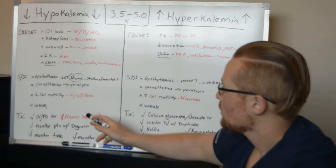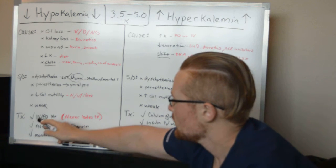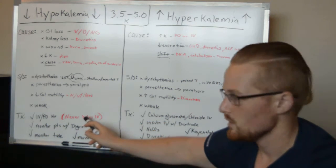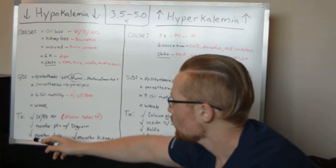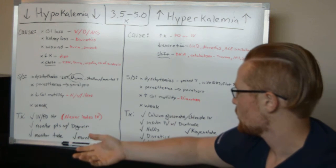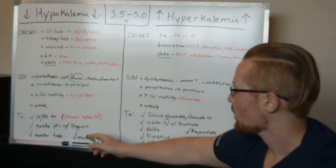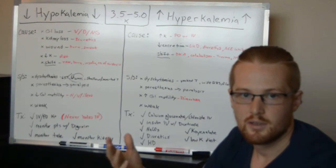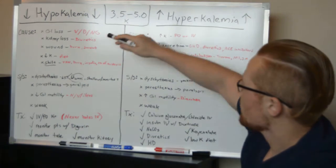So treatment, when you have low potassium, you want to give IV or PO potassium, but never bolus IV, and that's always on the test. And you're going to want to put the patient on a heart monitor, so that you can keep track of any dysrhythmias. And you're going to want to monitor their kidney function to make sure, if they do go into renal insufficiency, that they don't go from this side to the other spectrum.